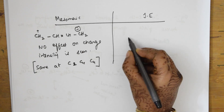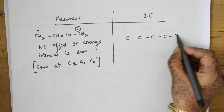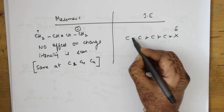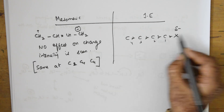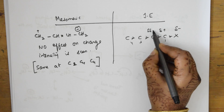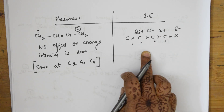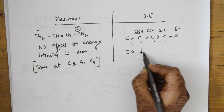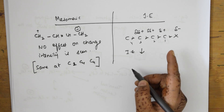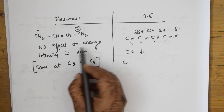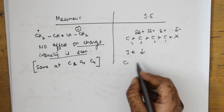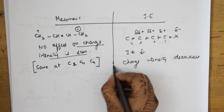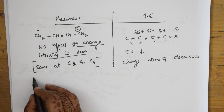When it comes to inductive effect, if the chain is longer with an electronegative atom X at one end, the electron density is dragged towards X. As we move away from the electronegative halogen atom — carbon 1 becomes partial negative, carbon 2 partial positive, and so on — the inductive effect decreases along the chain, and charge intensity also decreases with distance. In mesomeric effect, charge intensity remains the same; in inductive effect, charge intensity decreases.